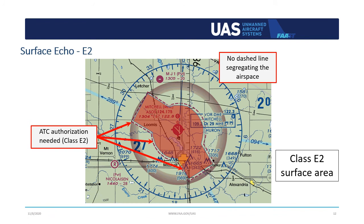Sometimes the extensions are not segregated from the Echo 2 area. In this example, you can see there are no dashed or solid lines segregating the airspace. In this case, the entire area requires FAA authorization prior to flight. Echo 2 airspace, including Echo 2 extensions, requires that you obtain an ATC authorization through LAANC or DroneZone before you can fly.